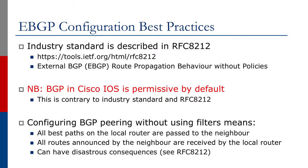All routes announced by the neighbor are received by the local router as well. This can have disastrous consequences, such as route leaks, which means traffic being routed through an unexpected path. You can look at RFC 8212 for more information.